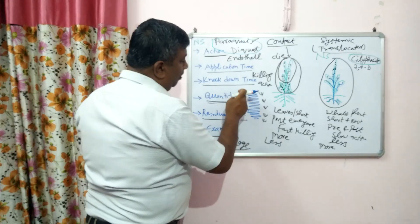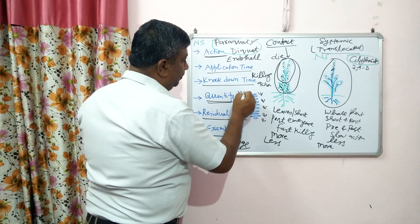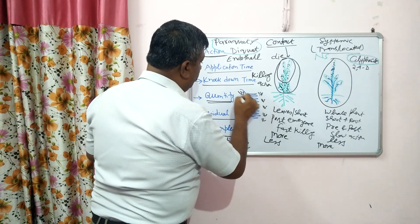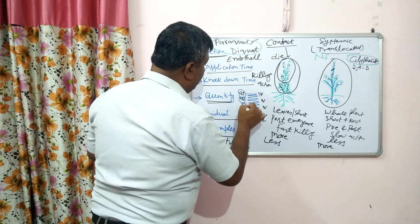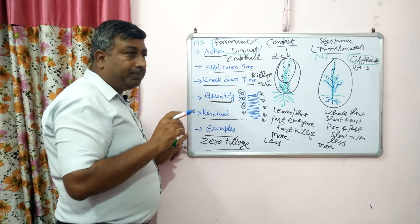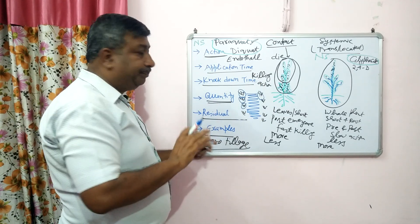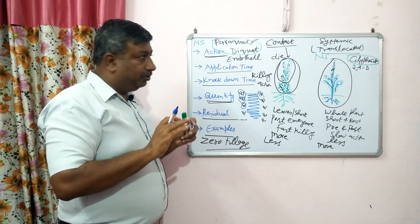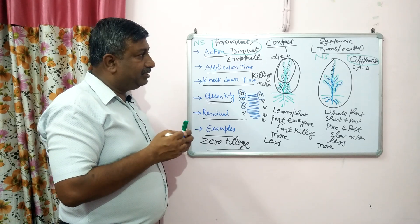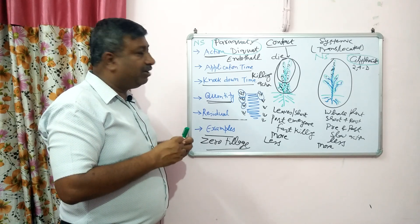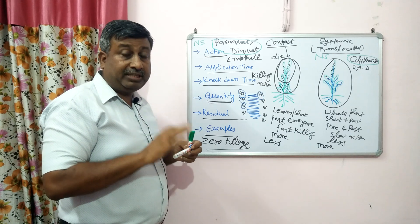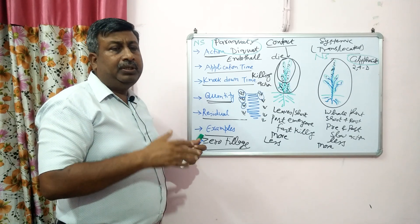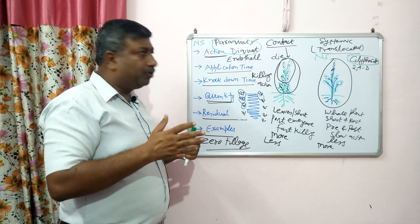If droplets fall on the crop, the crop will also be damaged. This is the problem with non-selective herbicides. Glyphosate, diquat, and paraquat must be used carefully. That is why they are used in fallow fields, irrigation channels, and bunds — areas where there is no crop.